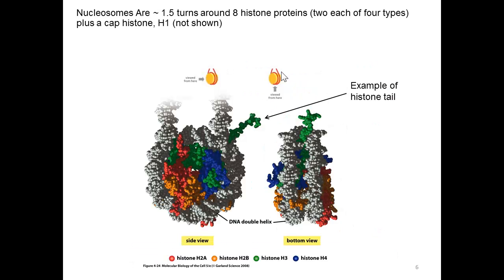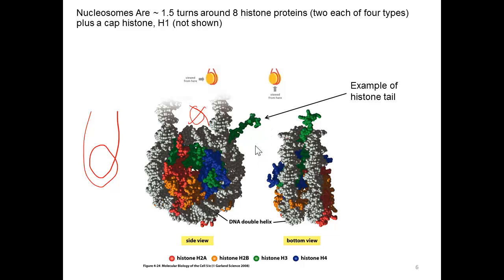A nucleosome refers to one set of histone proteins where the DNA wraps around approximately 1.8 times. This represents one of the beads of the bead-on-a-string structure. The protein core is made up of four different histone proteins — colored green, blue, red, and orange — and there are two copies of each protein, so there are actually eight protein subunits on the inside of a protein core. A fifth histone protein, H1, binds to the outside of the nucleosome but is not shown in this picture. Each of these eight protein subunits has a tail region which can wrap around and bind the DNA very tightly. It wraps around the DNA by possessing a lot of positive charges — many amino acids of lysine and arginine, which are positively charged, and they interact very strongly with the negatively charged DNA.